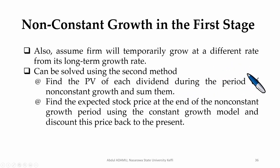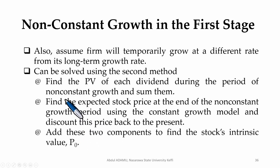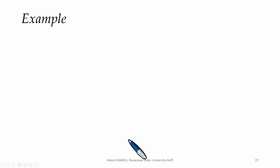Then find the expected stock price at the end of the non-constant growth period. So where this dividend stops, you look for the price of the stock at that period. Then you discount it back to the present. You find the present value of that price. Then you add the value you get from this first stage to the discounted value of that price at that period. That is the intrinsic value of the stock. Let's take an example and see.